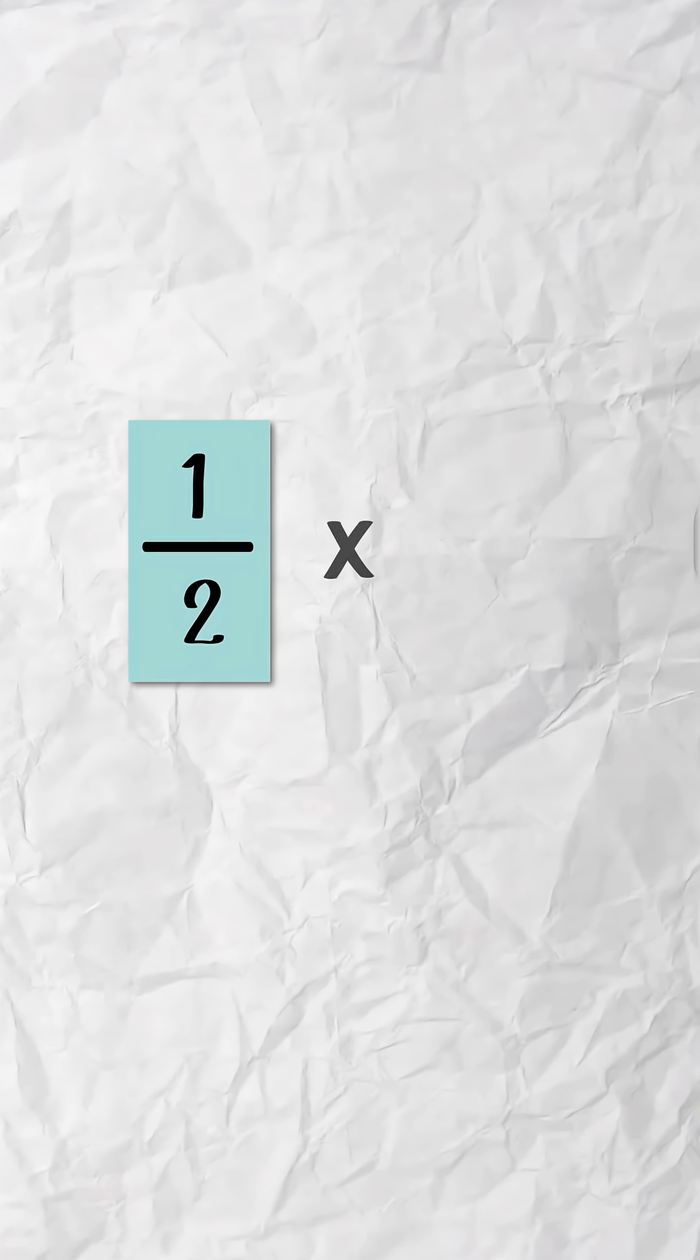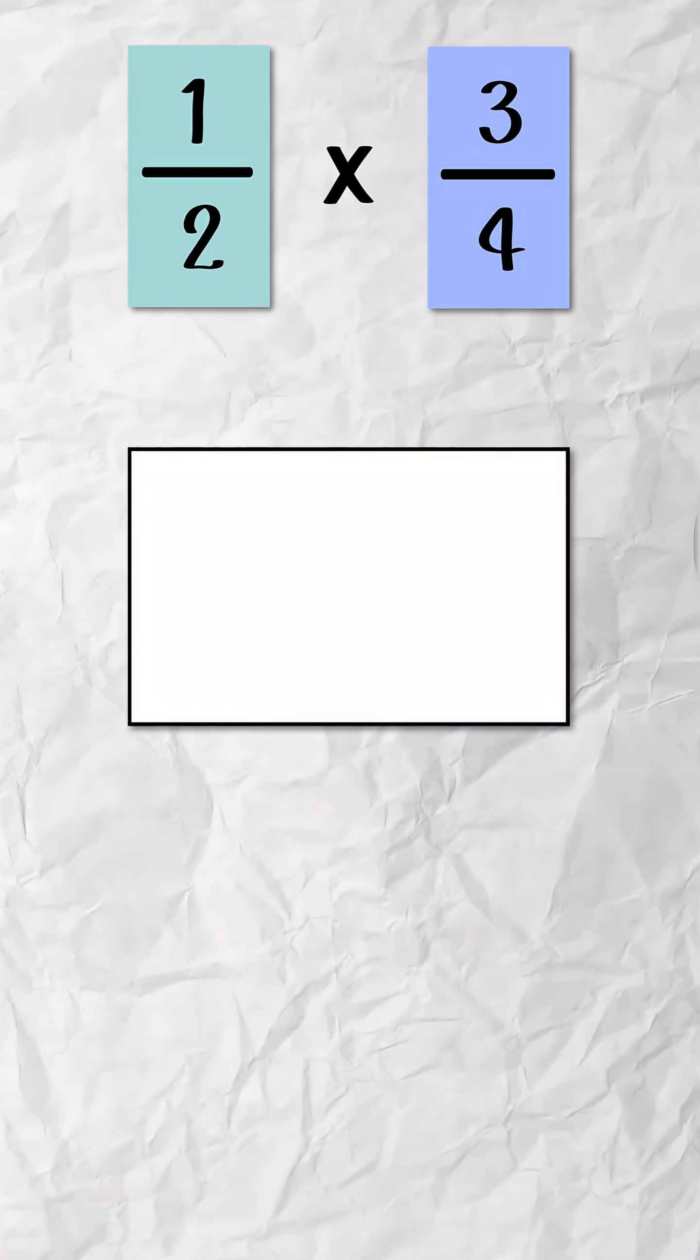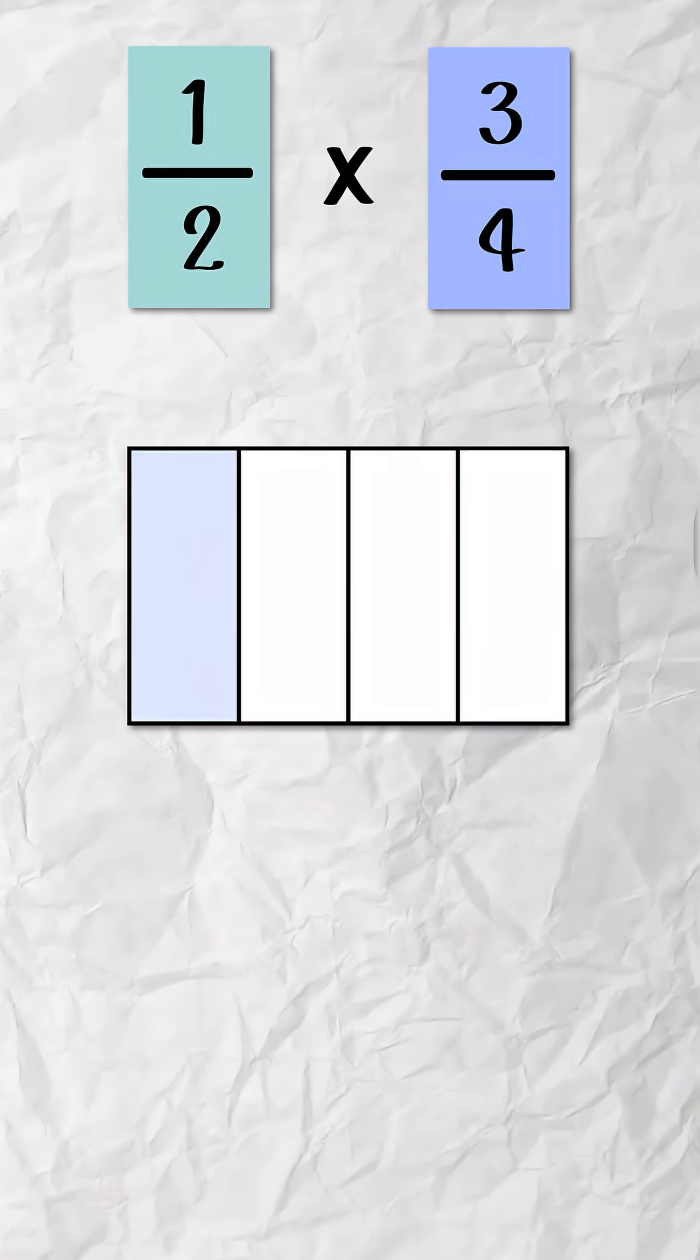When you multiply one-half by three-fourths, you're really finding one-half of three-fourths. Here's three-fourths visually. A whole unit, one, is divided into four equal parts, and we have three of them.